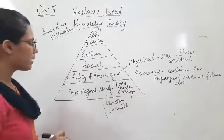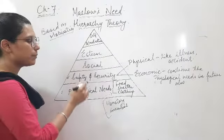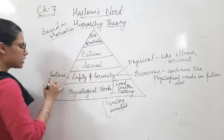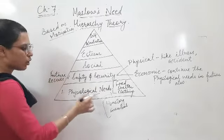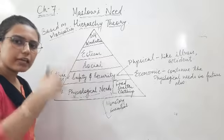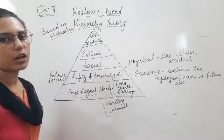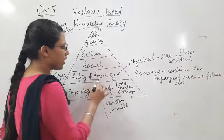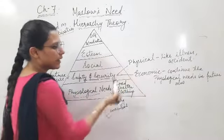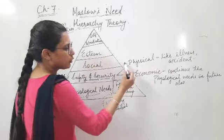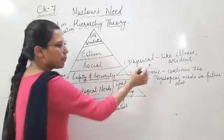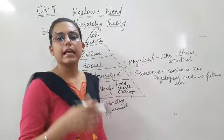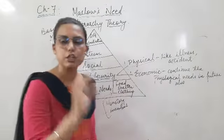What do you know about safety and security needs? Your concern is that your future is secure — my future is secure, my physiological needs are met in future, my job is secure. Safety and security needs are divided into two parts: physical and economic. Physical need means that if an employee has an accident or illness, then you have an insurance company so that the person can recover.